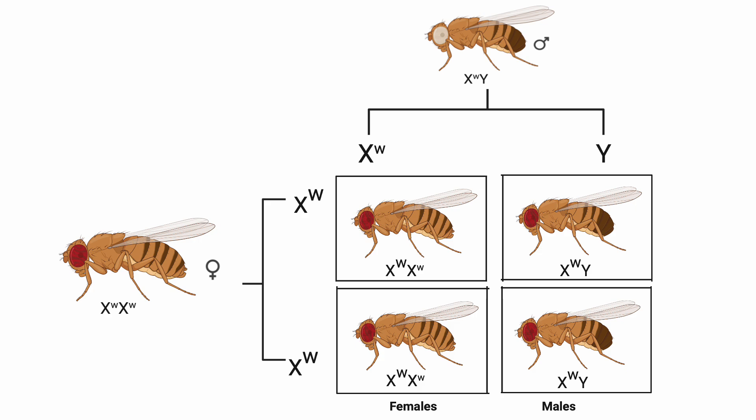In the reciprocal cross, the pattern is similar but the offspring genders are reversed. Female offspring are all red-eyed, X^W X^w, while male offspring are also red-eyed, X^W Y.